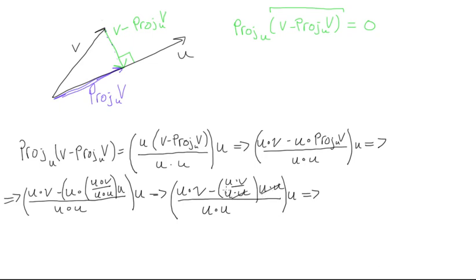If we just cancel those, we will get—keep it in brackets—(u dot v minus u dot v) over u dot u, all times u, which would equal zero over u dot u times u. And if we keep going, we'll find this is equal to zero over u dot u, which would just be zero times u, and zero times u is equal to zero.